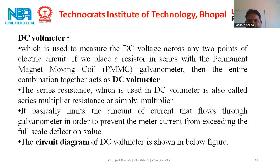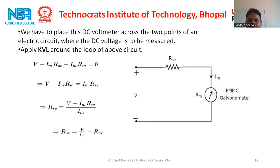A DC voltmeter is used to measure the DC voltage across two points of an electric circuit. If we place a resistor in series with the PMMC galvanometer, then the entire combination together acts as a DC voltmeter. The series resistance used in the DC voltmeter is also called a series multiplier resistance or simply multiplier. It basically limits the amount of current that flows through the galvanometer in order to prevent the meter current from exceeding the full scale deflection value. This is the basic circuit diagram of the DC voltmeter, showing the basic PMMC galvanometer in series with the multiplier resistance.